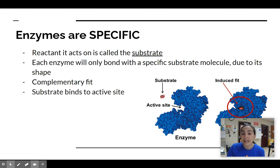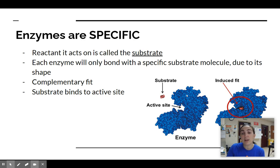The substrate binds to the region of the enzyme known as the active site. All the little blue circles on this enzyme represent different amino acids that make up the protein, and this protein — like all the others we talked about earlier this week — has a primary structure, that order of amino acids, which then folded and coiled up into secondary and tertiary structure, into this shape that specifically has a little nook where the substrate can bind.